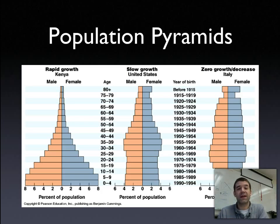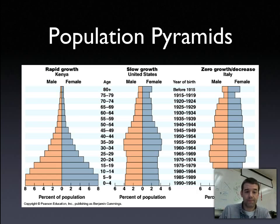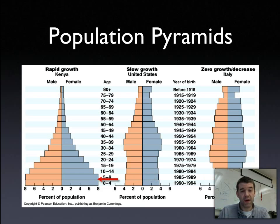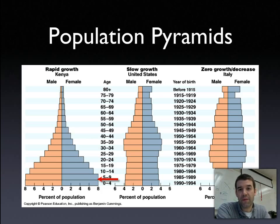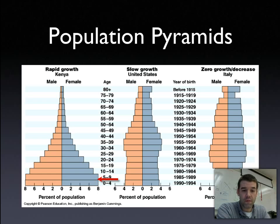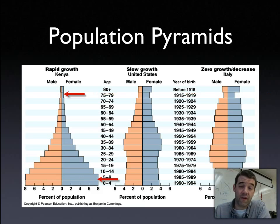Looking at three side-by-side comparisons of Kenya, the United States, and Italy, we see three distinctly different pictures shown by percent of population moving away from the center for males and females. In Kenya, we have a rapid growth population pyramid — the wider the base, generally the more dramatic the natural rate of increase. You see many more young dependents in the population, and the narrow top is reflective of a shorter life expectancy.